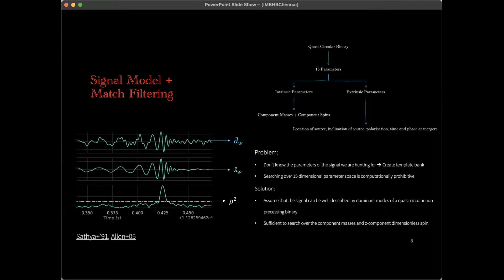Whereas the extrinsic set of parameters give an idea about the location of the source, the inclination of the source with respect to the observer, the polarization angles, and the time and phase at coalescence. Now the real problem is that we don't know the parameters of the signal that we're hunting for beforehand, so we try to create a discrete bank of filter waveforms and we cross-correlate the detector data with each of these template waveforms. If the gravitational wave detector data contains a gravitational wave signal and it matches with one of the templates in the template bank, then we will see a peak in the SNR time series.